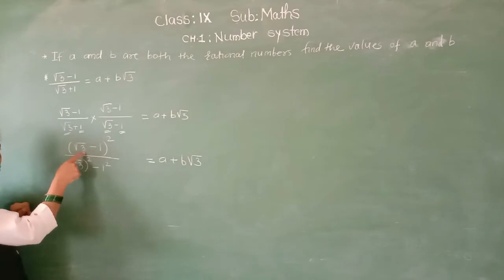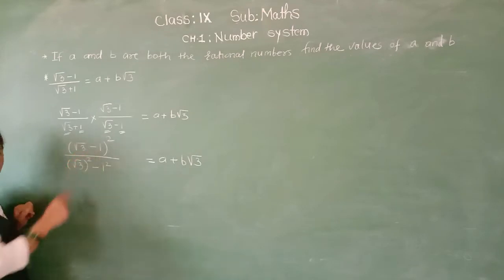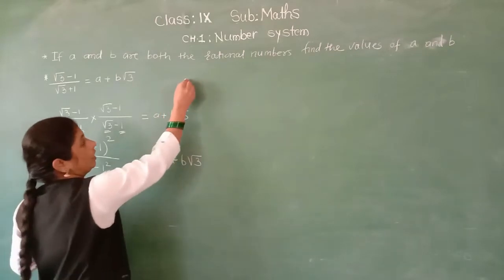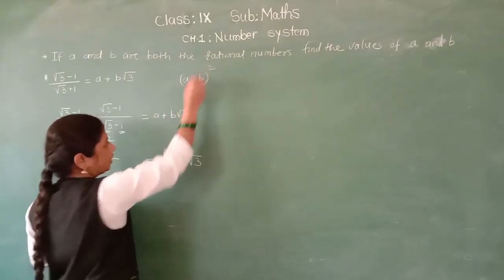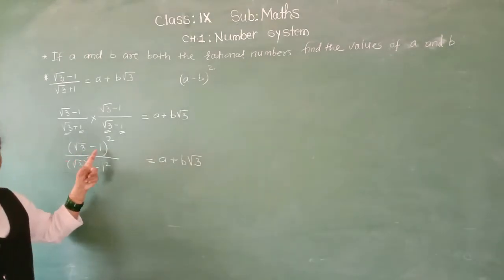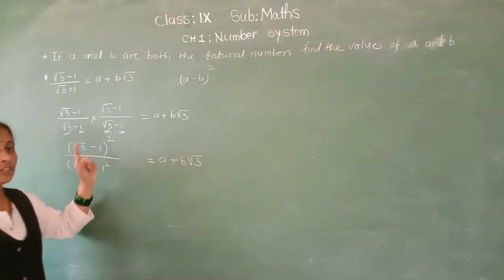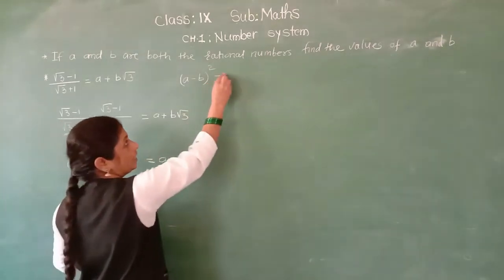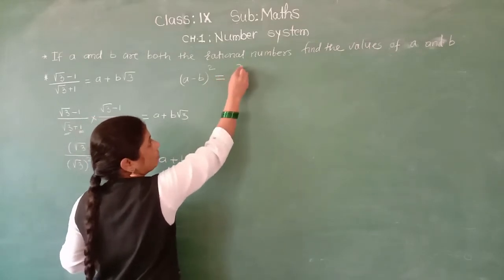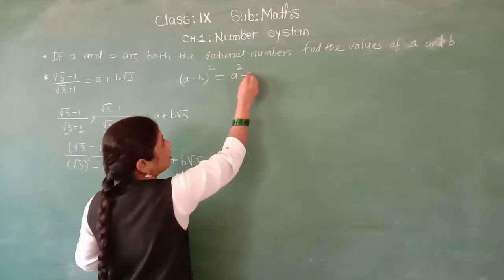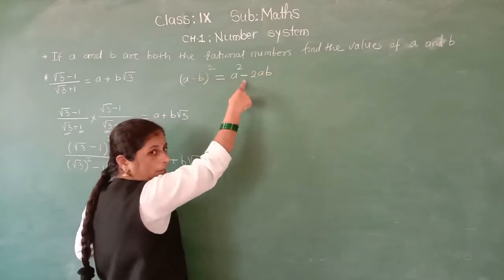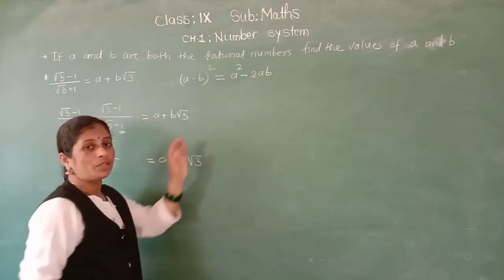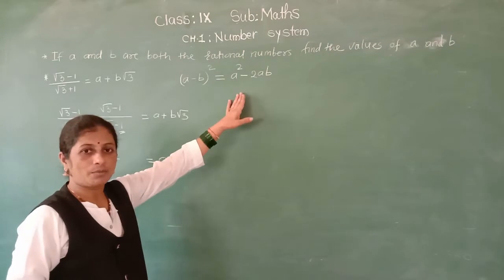Now here, which identity will be used? Root 3 minus 1 — so which identity? A minus B bracket square. What is the A minus B bracket square identity? A squared minus 2AB plus B squared — so all terms are positive.